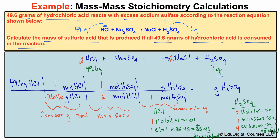One mole of sulfuric acid is 98.09 grams. Now we plug everything in, starting with 49.6 grams of HCl on the left and working right. Any number other than one in the denominator means we divide; in the numerator means we multiply. So: 49.6 ÷ 36.46 ÷ 2 × 98.09 = 66.7 grams of sulfuric acid. If we have 49.6 grams of HCl reacting with excess sodium sulfate, 66.7 grams of sulfuric acid will be produced.